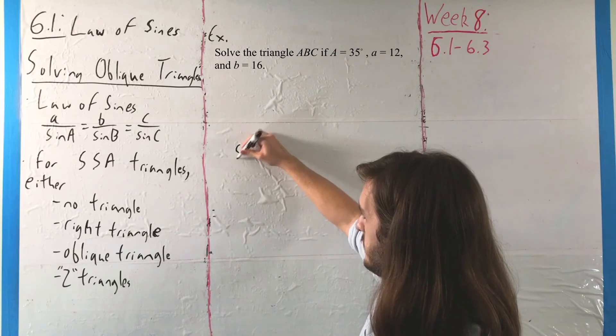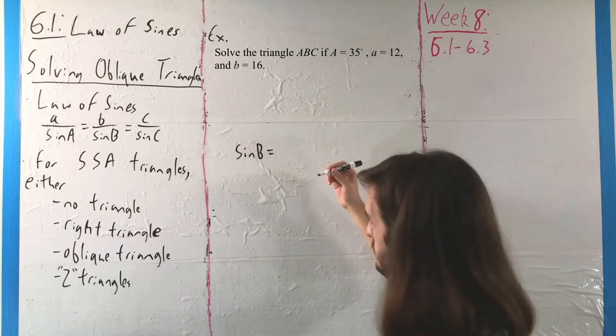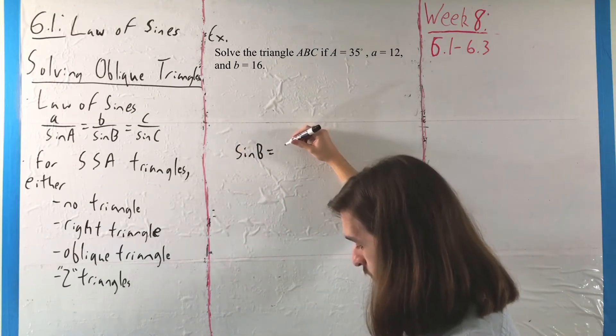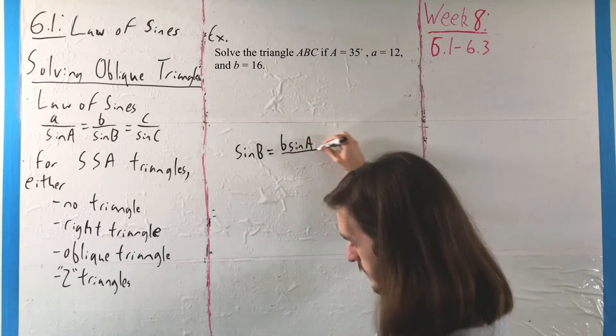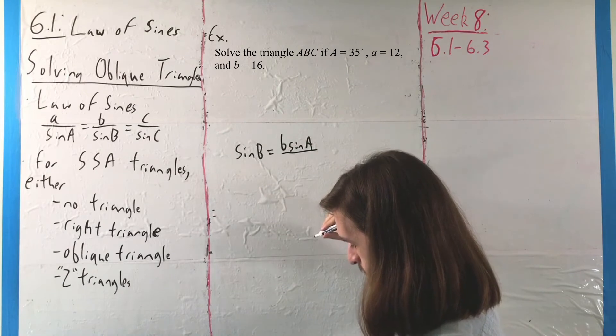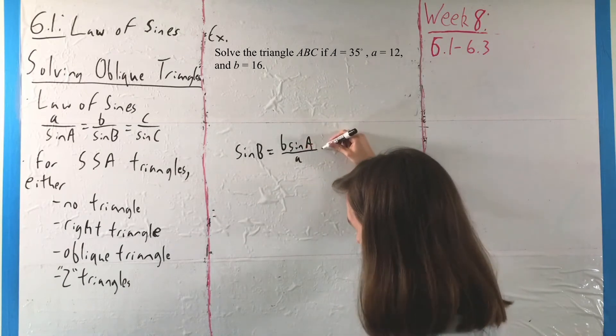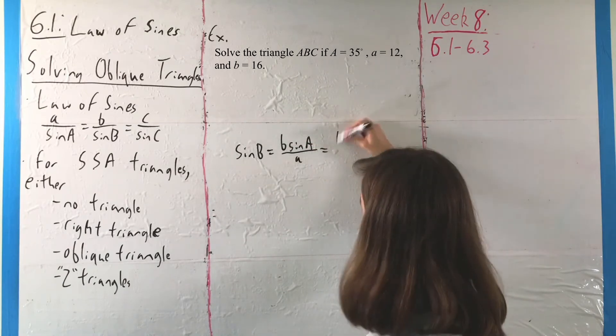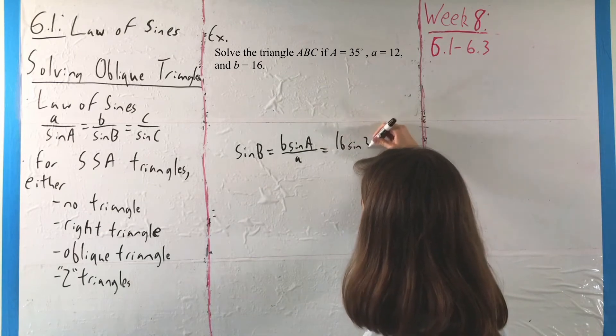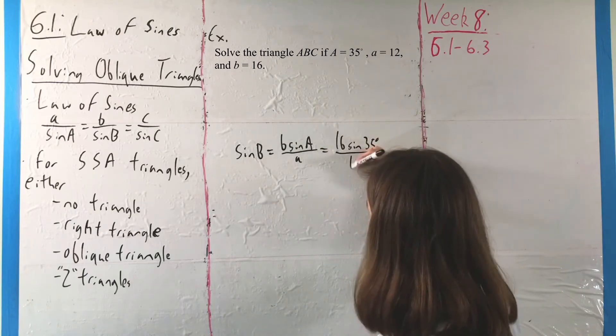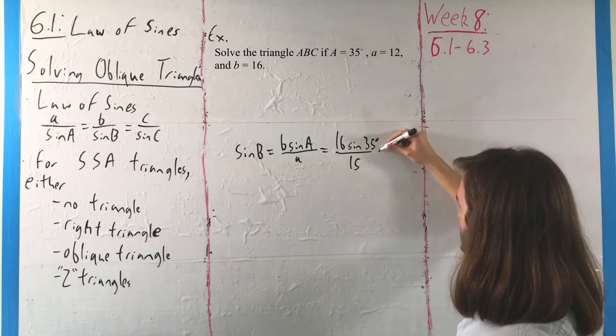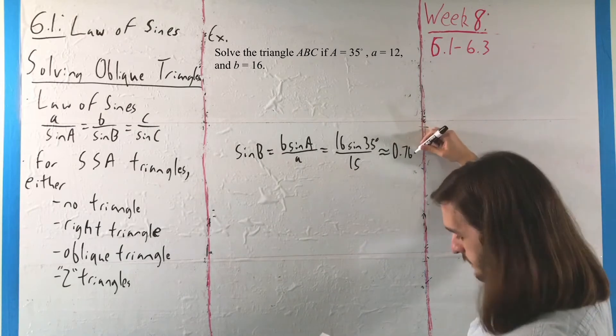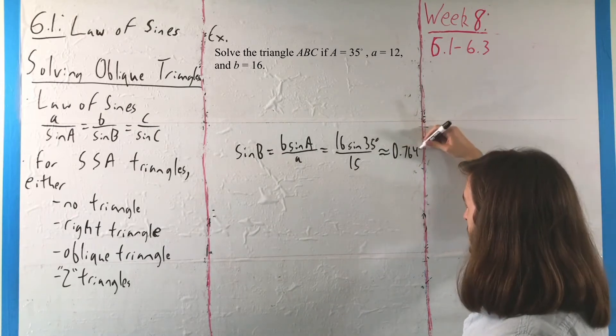We need to find sine of B, so we can get the value B, which again will be B times sine of A over A. In this case, that's 16 times sine of 35 degrees divided by 15 unitless measurements, which here is a legitimate but not very pretty value of 0.7648.